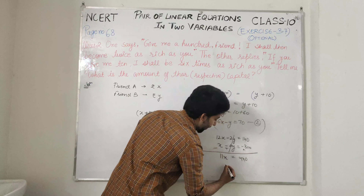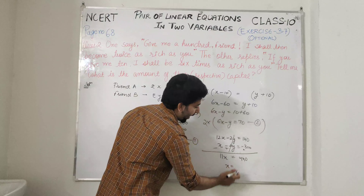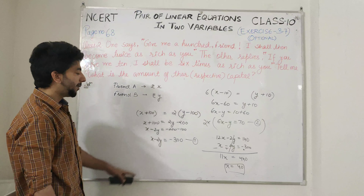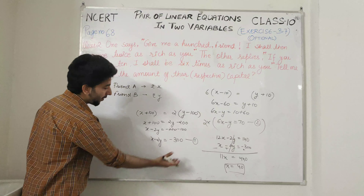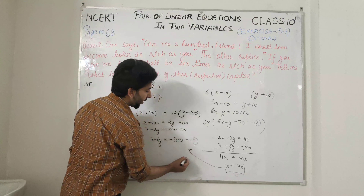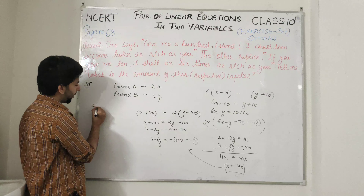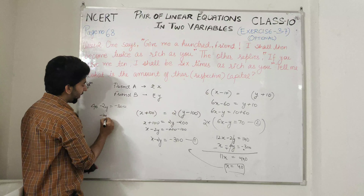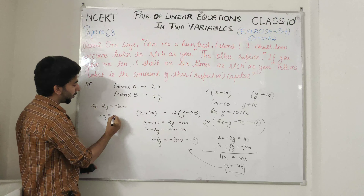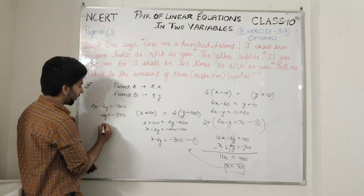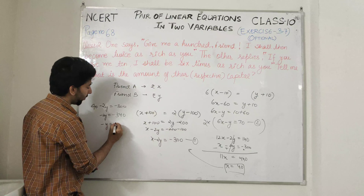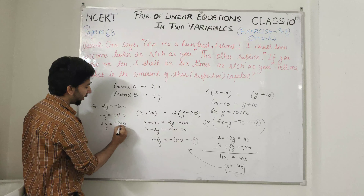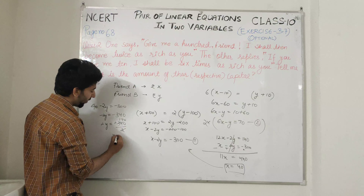11X = 440. X = 440 divided by 11 = 40. X आ गया हमारा 40. अब Y की value के लिए किसी भी एक equation में X की value रखते हैं — first equation लेते हैं: 40 minus 2Y = minus 300. Minus 2Y = minus 300 minus 40 = minus 340. Y = minus 340 divided by minus 2 = 170.